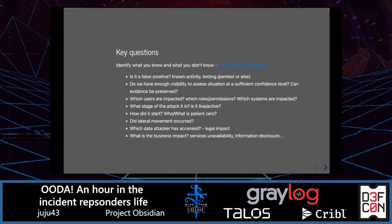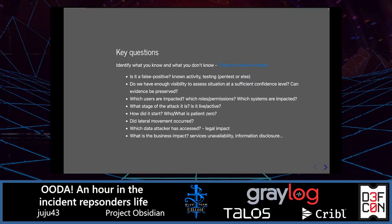During an incident, what is very important is to identify what you know and what you don't know. To quote Donald Rumsfeld, there are known knowns, known unknowns, unknown knowns, and unknown unknowns. The usual start is often: is it a false positive? Is it a non-legitimate activity, a known testing — be it pen testing or something else? Do we have enough visibility to assess the situation at a sufficient confidence level? That's essential to avoid confirmation bias from having just one possibly unreliable source of information.